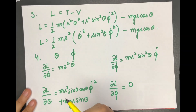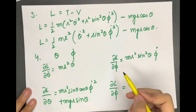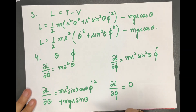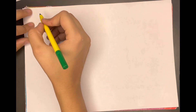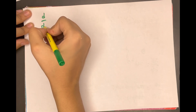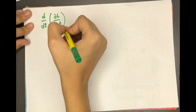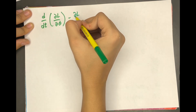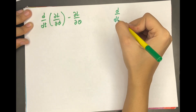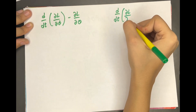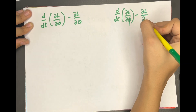The fifth step is to substitute these quantities back into the Lagrange equation. We have two Lagrange equations: one in terms of θ — d/dt(∂L/∂θ̇) − ∂L/∂θ = 0 — and another in terms of φ — d/dt(∂L/∂φ̇) − ∂L/∂φ = 0.